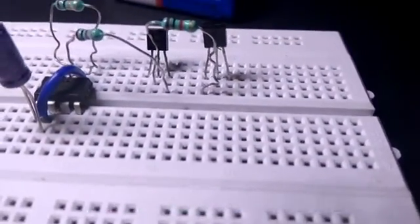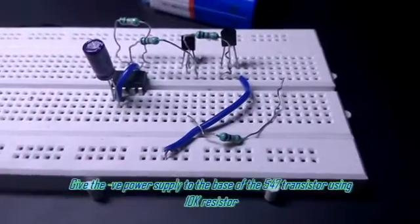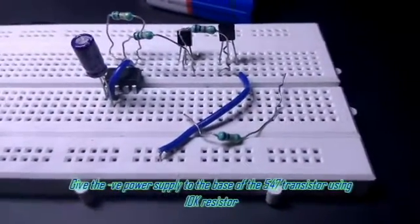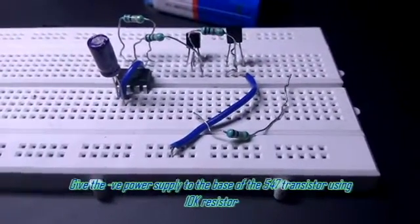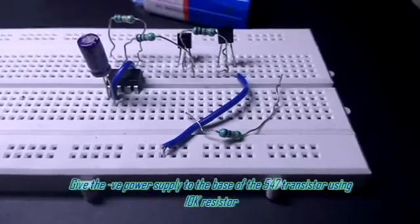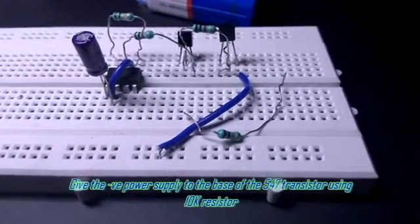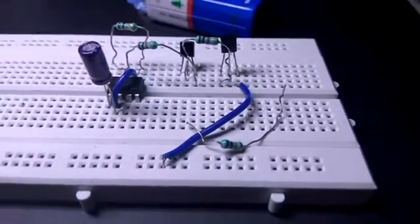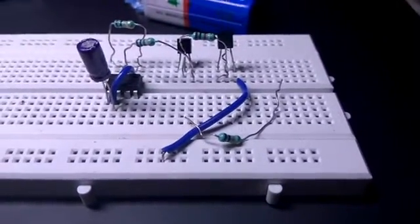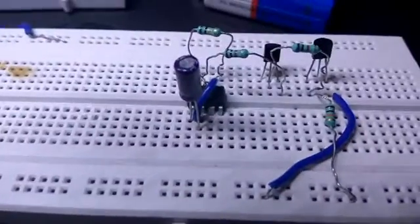Now take your remaining 10k resistor and connect one pin to the base of the BC 547 transistor and the other to the negative power supply.